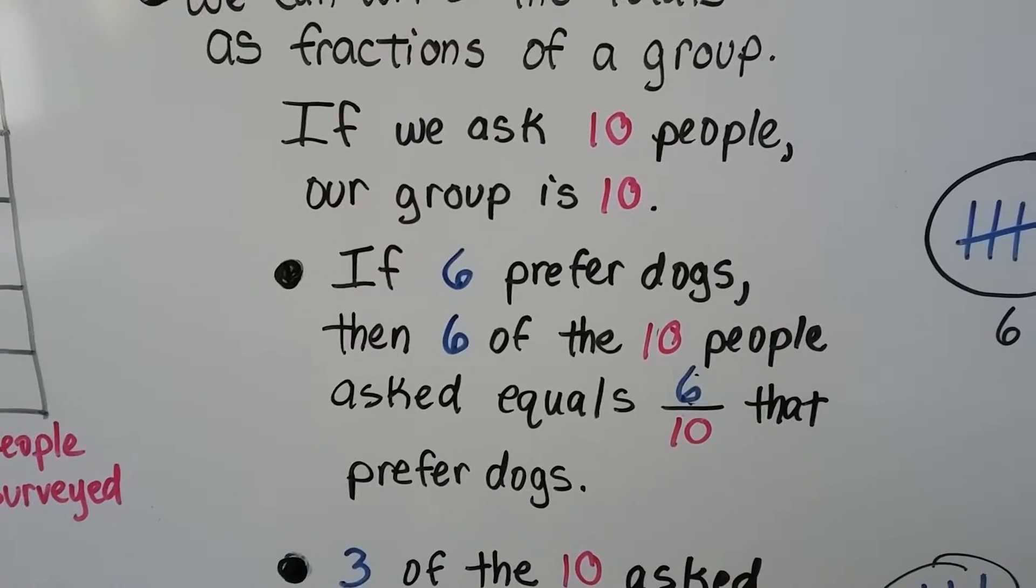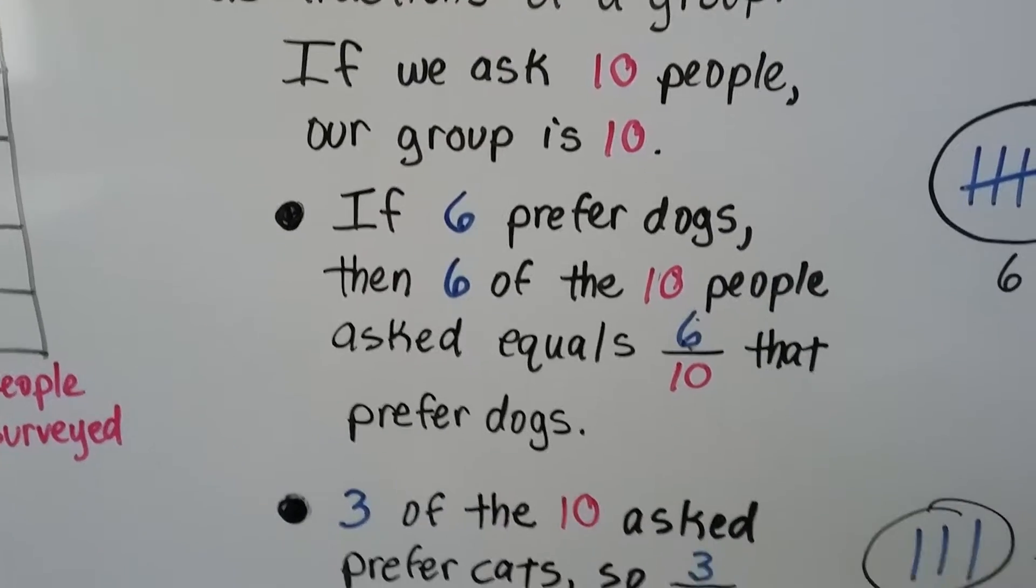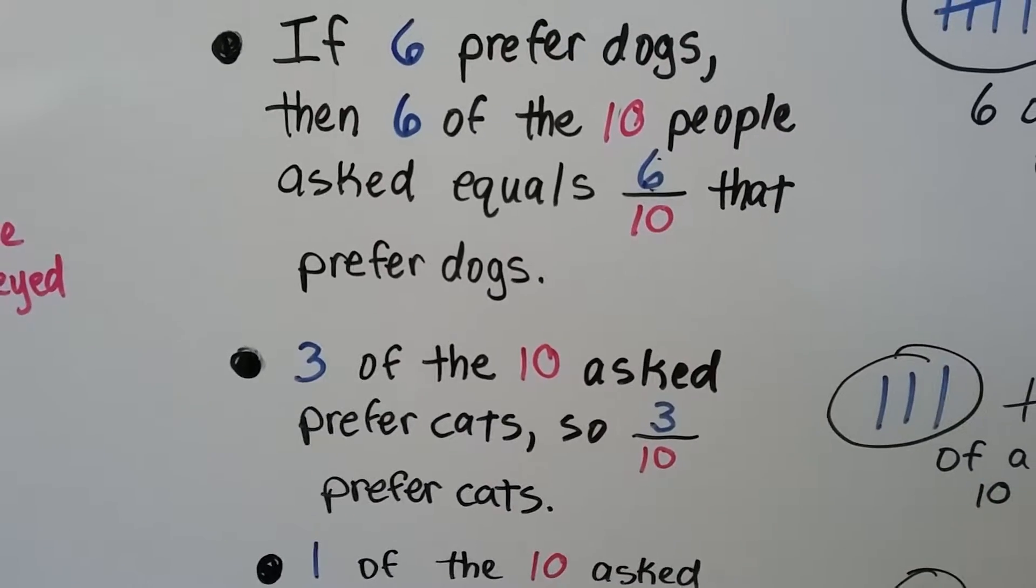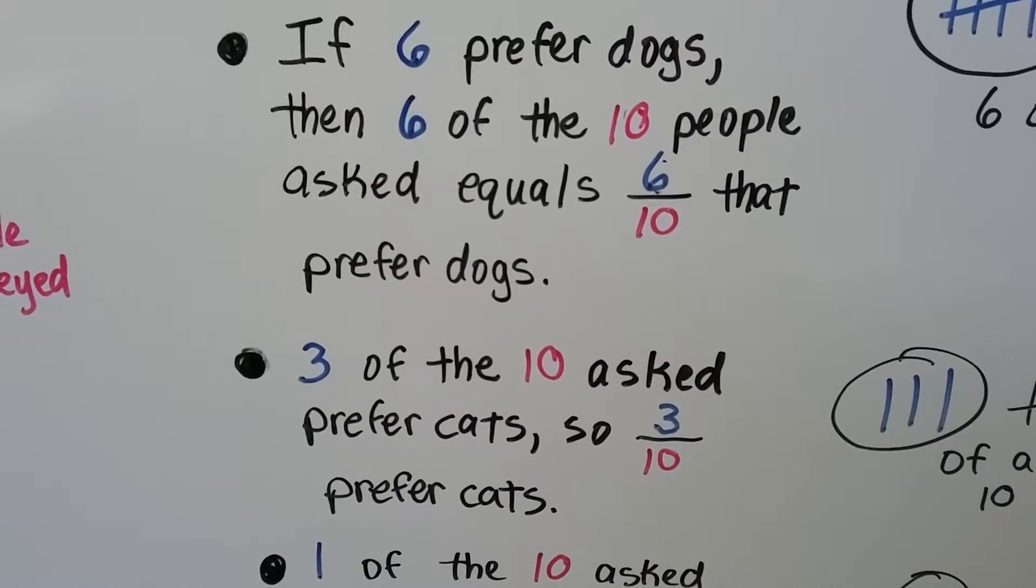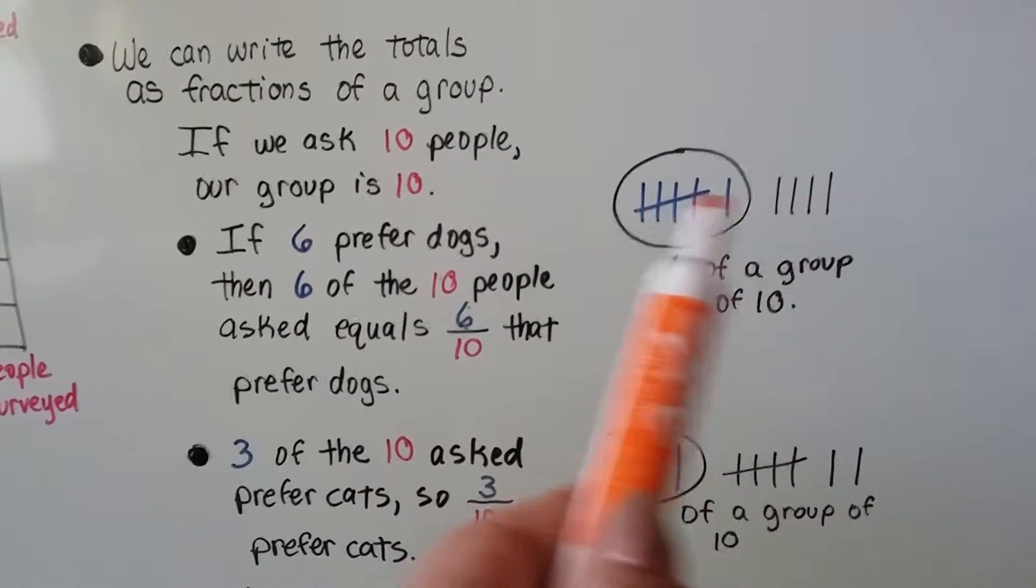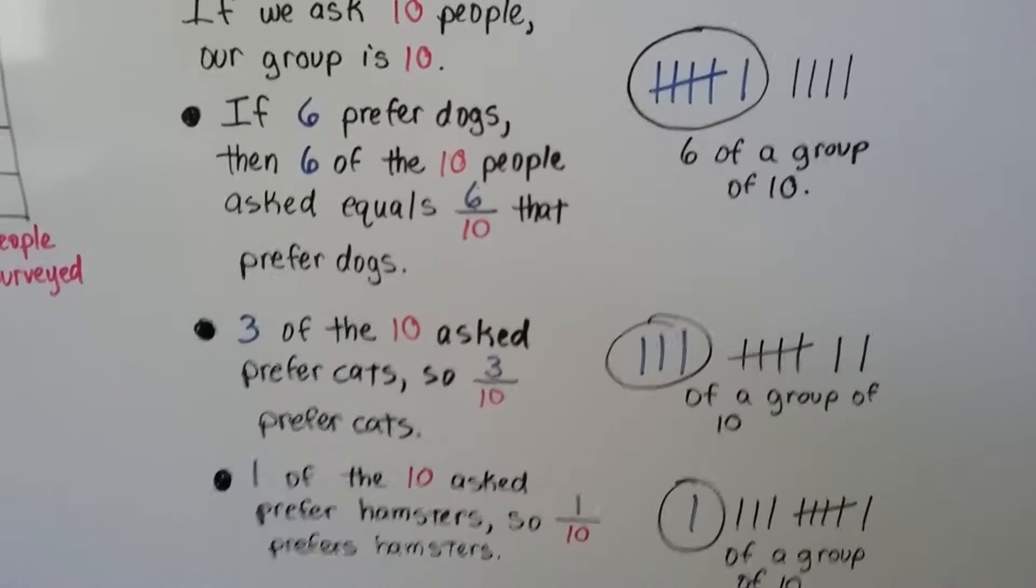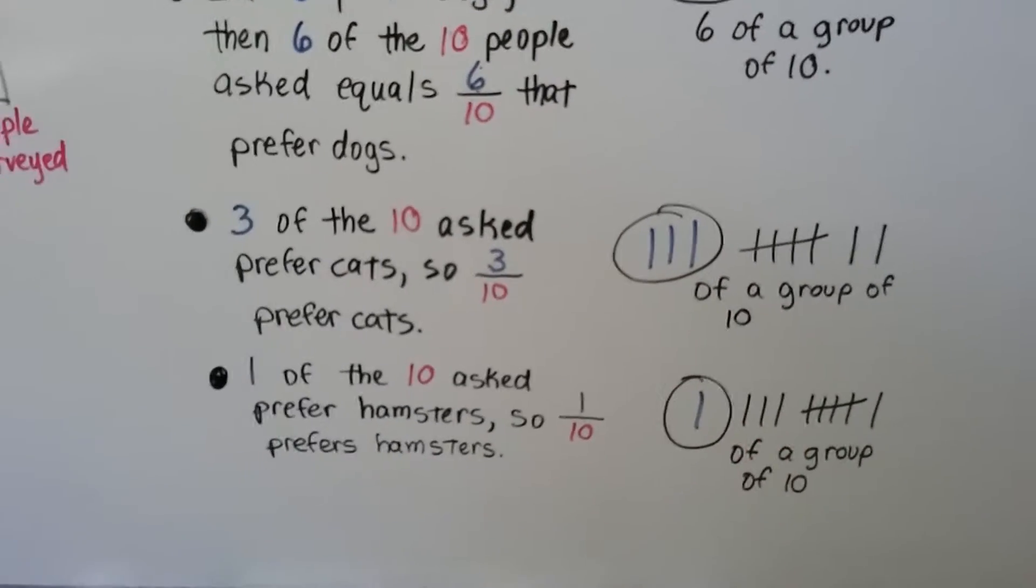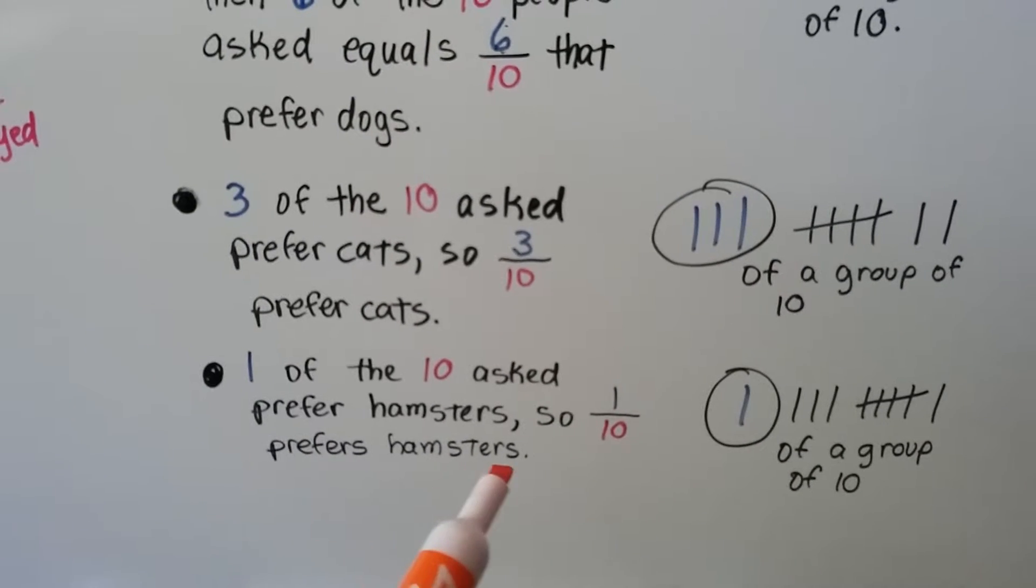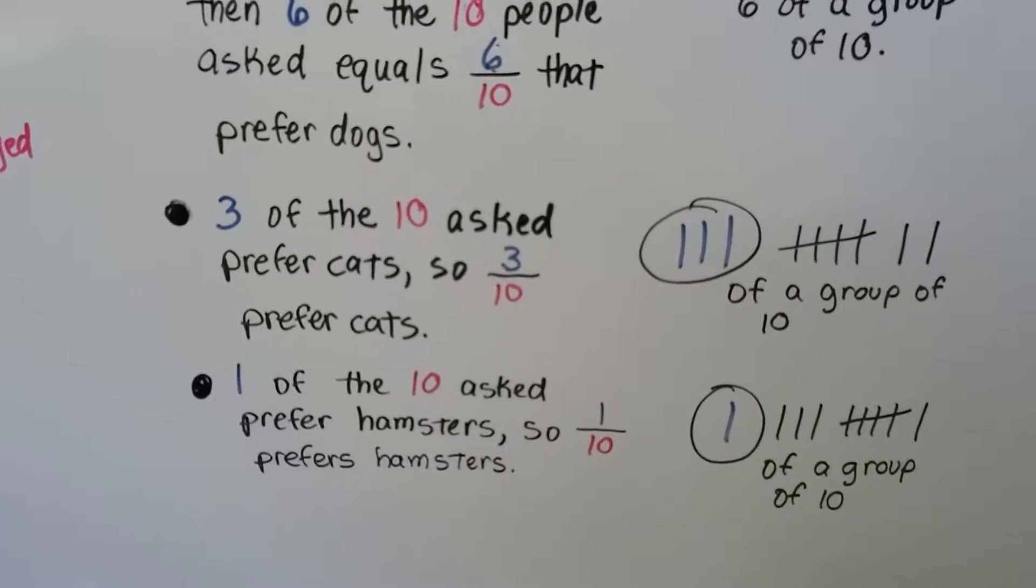Our group is ten, six preferred dogs. We have six tenths that prefers dogs. Three of the ten asked prefer cats, so three tenths prefer cats. Six of the ten prefer dogs. Three of the group of ten prefer cats. And one of the group of ten prefers hamsters. So one of the ten that prefers hamsters means one tenth prefers hamsters.